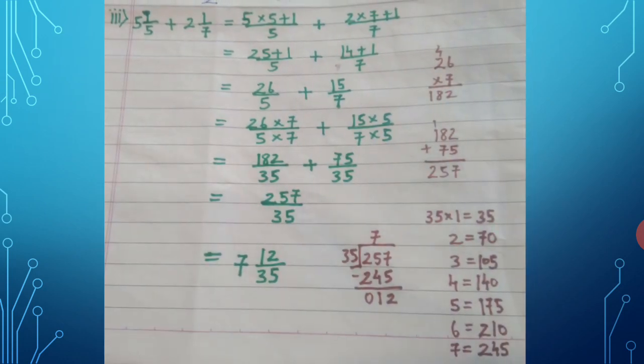Sum number 3: 5 and 1 upon 5 plus 2 and 1 upon 7. Convert: 5 × 5 = 25, plus 1 upon 5; 2 × 7 = 14, plus 1 upon 7. This gives 26 upon 5 and 15 upon 7. We cannot add them directly until the denominators are equal.